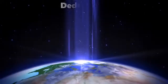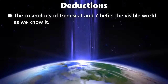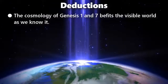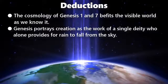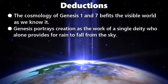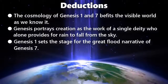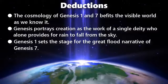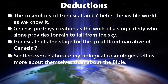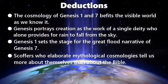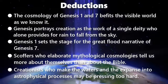From these verses we can make five deductions. The cosmology of Genesis 1 and 7 befits the visible world as we know it. Genesis portrays the creation as the work of a single deity who alone provides for rain to fall from the sky. Genesis chapter 1 sets the stage for the great flood narrative of Genesis chapter 7. Scoffers who elaborate mythological cosmologies tell us more about themselves than about the Bible. The creationists who make the waters and the expanse into astrophysical processes may be pressing too hard.